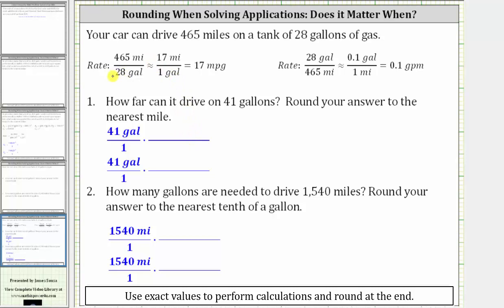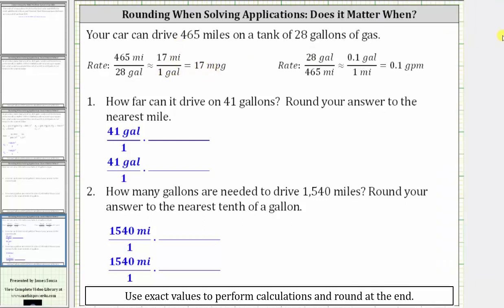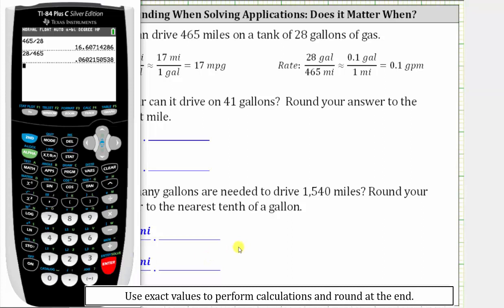Just for review: to find the unit rate in miles per gallon, we would divide 465 by 28, which, if we rounded to the nearest mile, gives us approximately 17 miles per gallon. To find the unit rate in gallons per mile, we divide 28 by 465. If we rounded to the nearest tenth, this gives us approximately 0.1 gallons per mile, because there is a six in the hundredths place value, so we round up to 0.1.